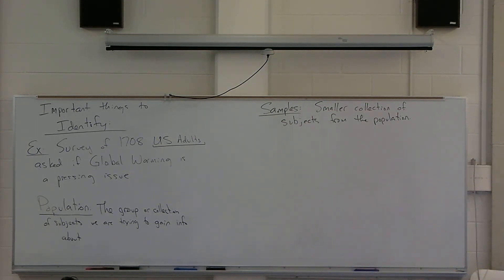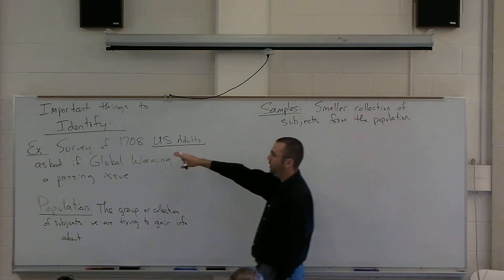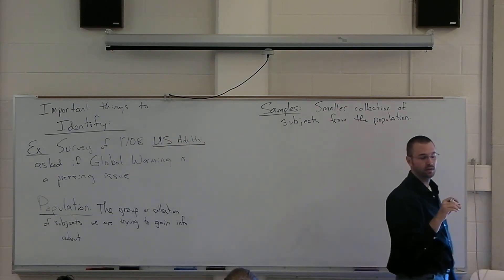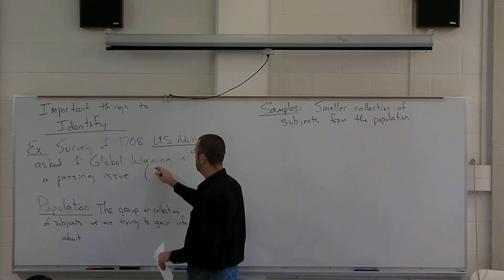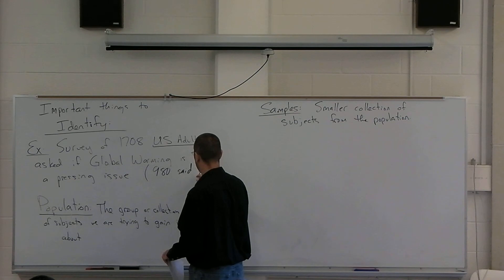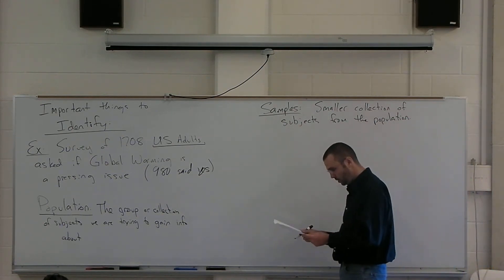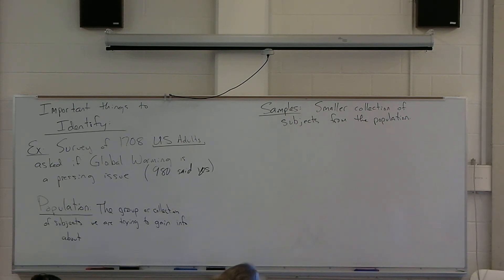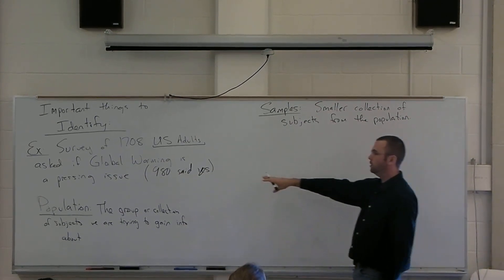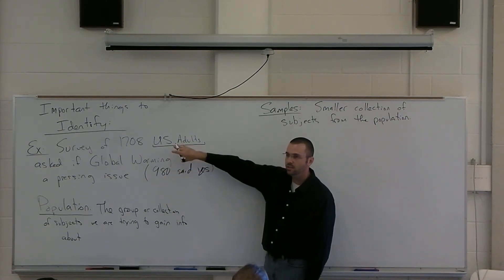Samples are smaller collections of subjects from the population, and they are typically significantly smaller than the population itself. In our example, we've identified our population as U.S. adults. What's our sample? The sample is the 1,708 U.S. adults we are actually studying — a small sample from which we get our information. If we further this example and say that 980 of them said yes, this gives us information about the sample that we can use to extrapolate or make inferences about the entire population. That number — 980 — describes the people from our sample who believe global warming is a pressing issue.